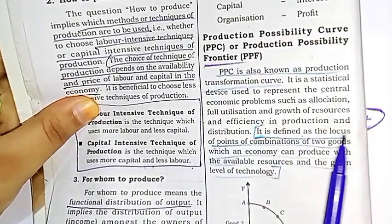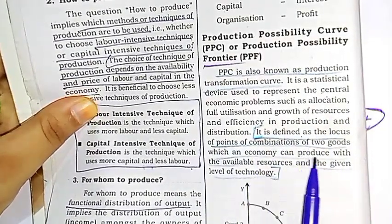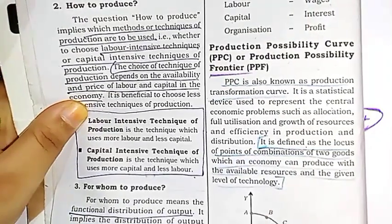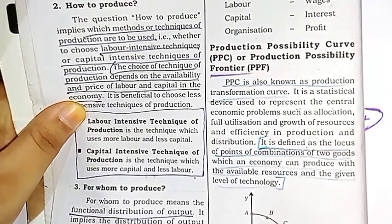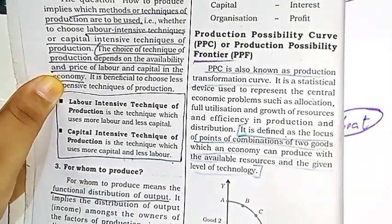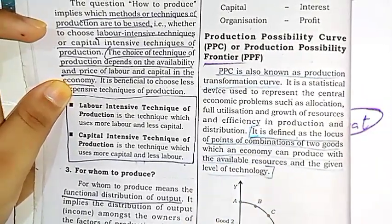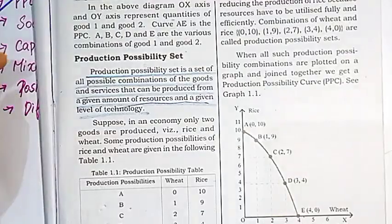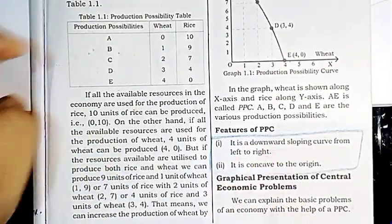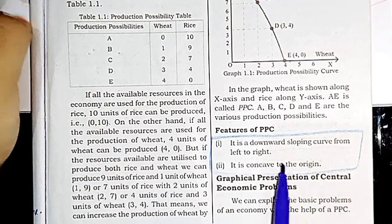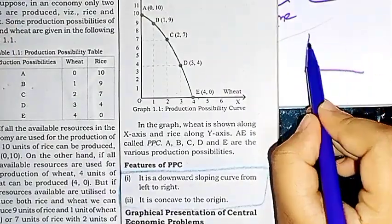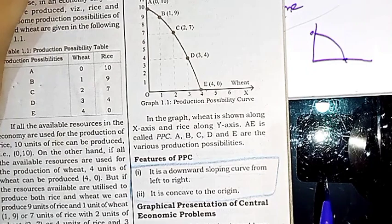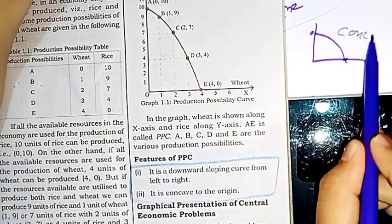PPC is defined as the locus of combinations of two goods which an economy can produce with available resources and a given level of technology. In our society, we use available resources and technology to produce two goods, represented on the PPC diagram. The features of PPC include a downward sloping shape from left to right.